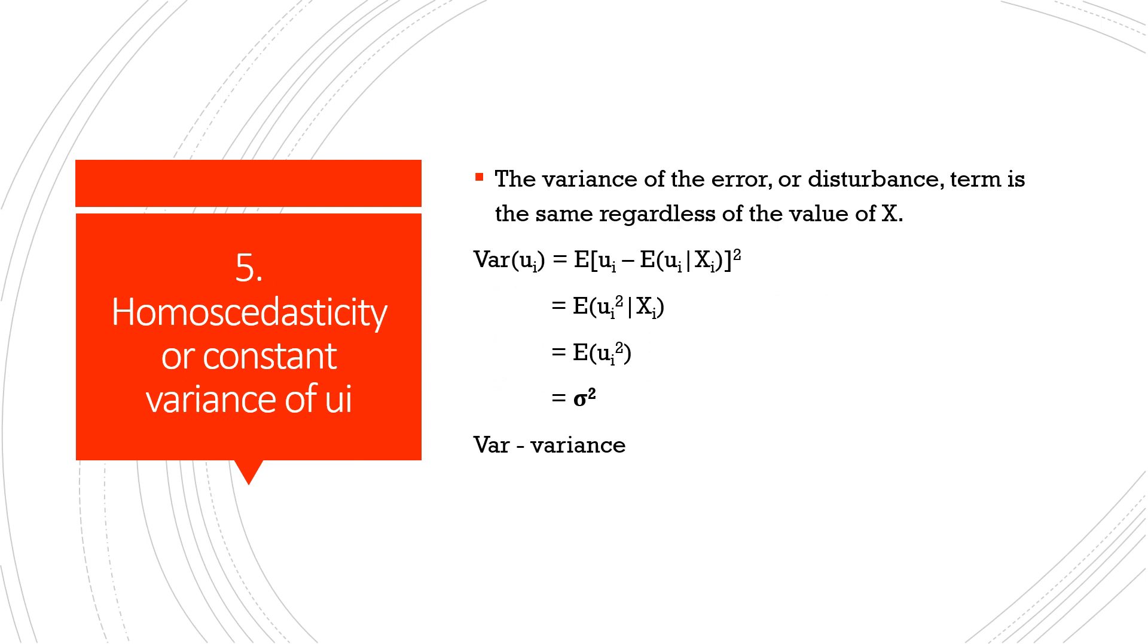The fifth is homoscedasticity or constant variance of mui. So the variance of the error or disturbance term should be same as per the fifth assumption, which is equal to sigma square, which is some constant. So it comes from the Greek verb schedenaim, which means to disperse or scatter. So in homoscedasticity, y population corresponding to various x values should have the same variance.